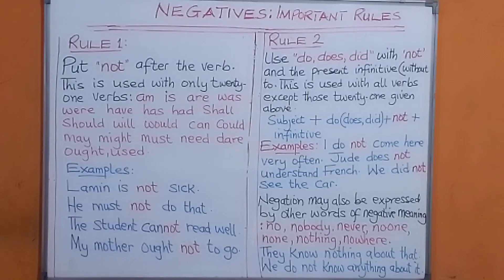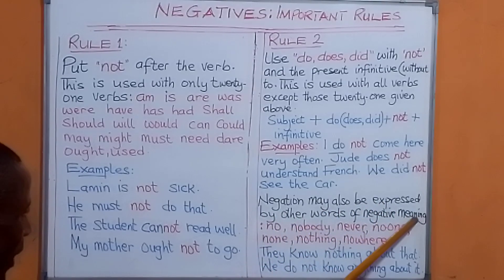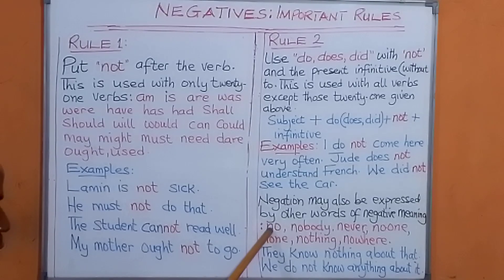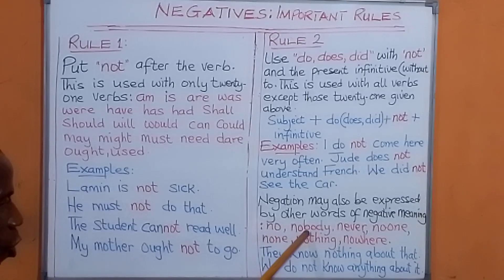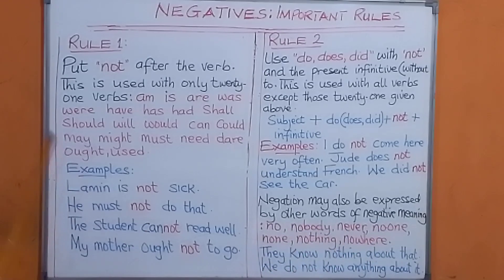Moreover, negation may also be expressed by other words of negative meaning. For example: 'no,' 'nobody,' 'never,' 'no one,' 'none,' 'nothing,' 'nowhere.' These are words of negative meaning.